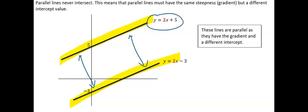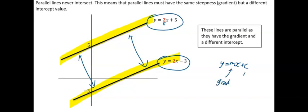If you look at these two lines: you've got y = 2x + 5 and y = 2x − 3. The gradient of the first one is 2. Remember y = mx + c is your general equation where m is your gradient and c is your intercept. So here your gradient is 2, and in the second one the gradient is also 2.